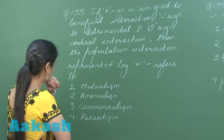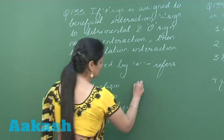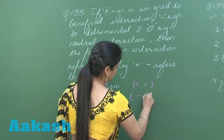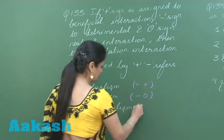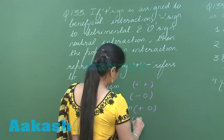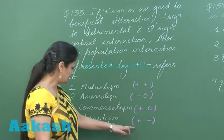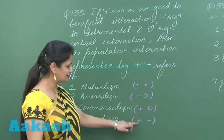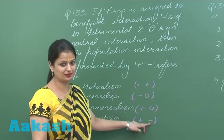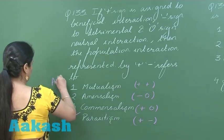Mutualism is a positive-positive interaction. Amensalism is negative-zero. Commensalism is positive-zero. Parasitism is a positive-negative interaction — the parasite is benefited and the host is negatively affected. So the right option for this question is option number 4.